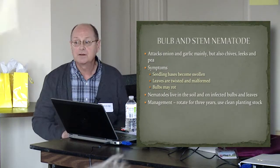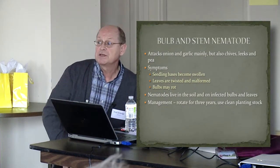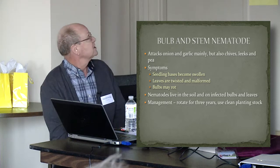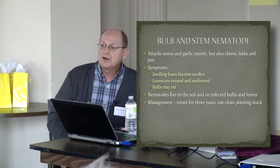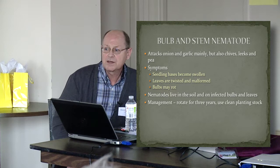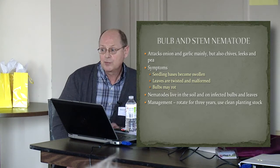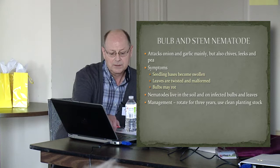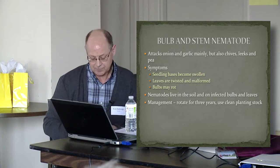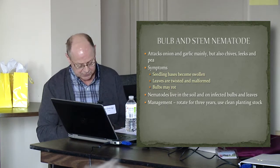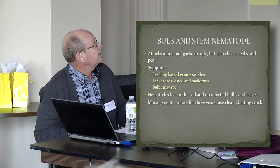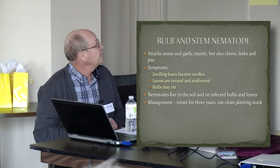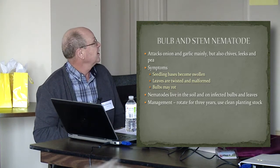The last condition we're going to talk about is the bulb and stem nematode. I have personally not seen it here, but in Ontario it's a very important disease for growers. It attacks onion and garlic, but also attacks chives, leek, and pea.